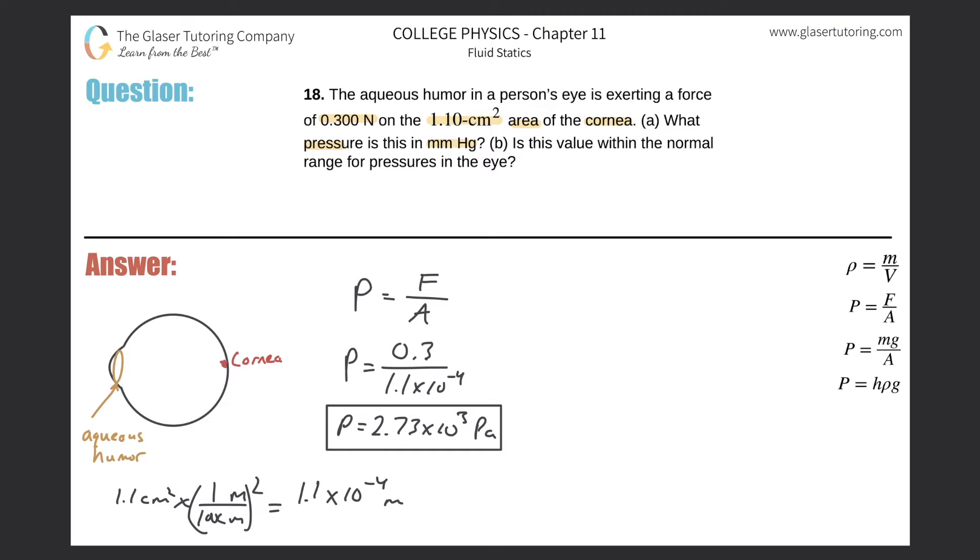That's not the answer they want—they want it in millimeters of mercury. We need just a couple of conversion factors. One atmosphere is equivalent to 760 millimeters of mercury, and that's also equivalent to 1.01 times 10 to the 5 Pascal. We can see the ratio we need to get from Pascal into millimeters of mercury.